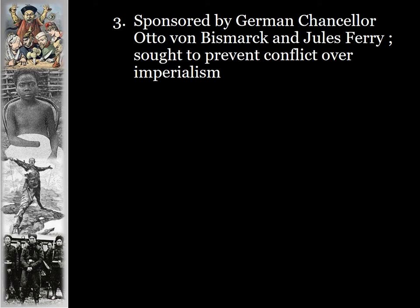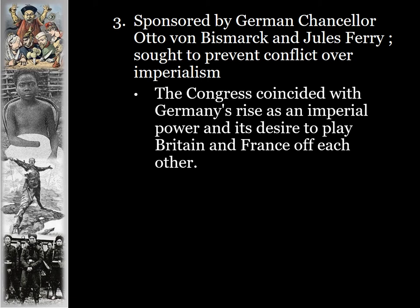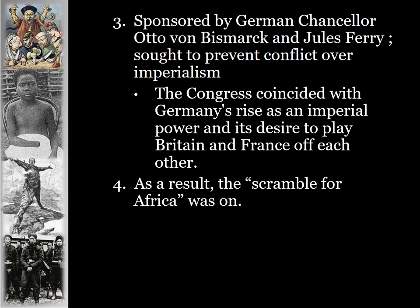The Berlin Conference was sponsored by German Chancellor Otto von Bismarck and Jules Ferry from France. They sought to prevent conflict over imperialism. The Congress coincided with Germany's rise as an imperial power and its desire to play Britain and France off of each other. Britain and France normally had a hate-hate relationship, so it was a way for Germany, as a newer nation, to claim some territories and play the two powers against each other. As a result, the scramble for Africa was on.